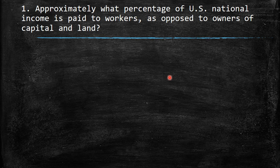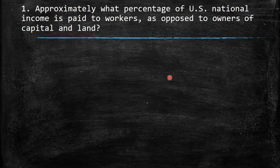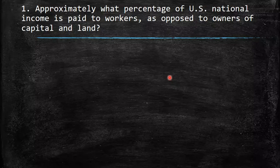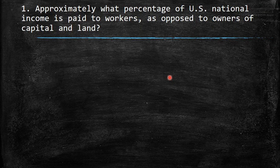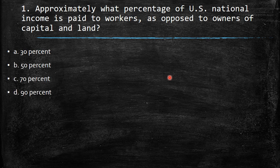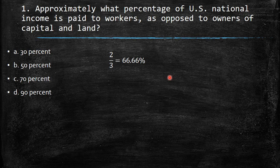The first question says: approximately what percentage of U.S. national income is paid to workers as opposed to owners of capital and land? We just mentioned how we split the total income in the U.S. between the three factors of production — land, capital, and labor. We have four options: 30, 50, 70, and 90%.